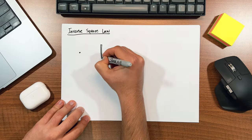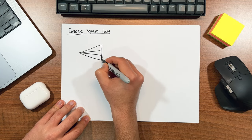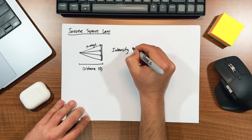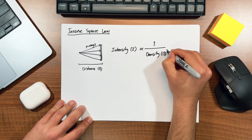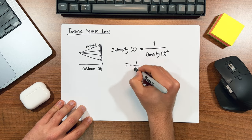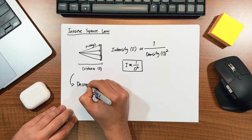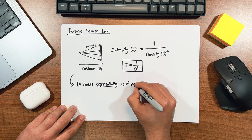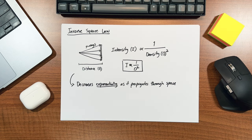The inverse square law is a fundamental principle of physics. So let's start off with the definition. It refers to the following: the intensity of radiation emitted from a point source is inversely proportional to the distance from the source squared, as long as the radiation has not been attenuated. Or basically, how the intensity of radiation decreases exponentially as it propagates through space.